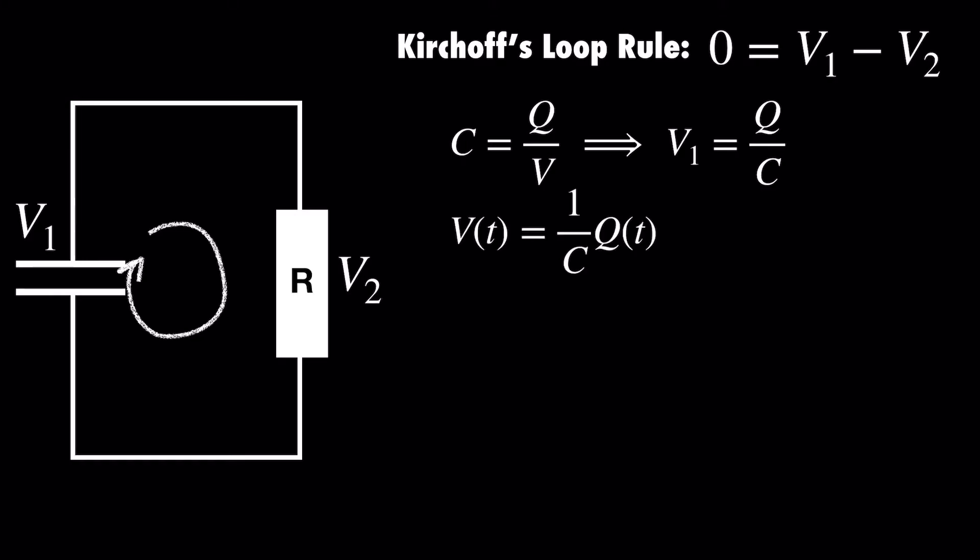V2 can be found by using the definition of resistance, so V2 is equal to IR. From our loop, we can see that V1 equals V2, therefore we can equate our two expressions for the voltage and get IR equals 1 over C times Q of T.